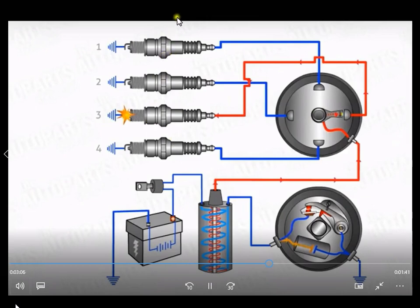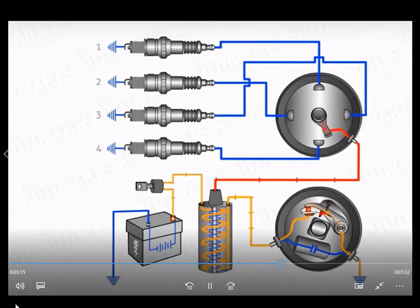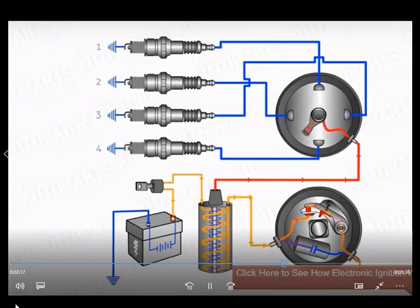Here is 4 spark plug. This needed for 4 cylinder engine. Now you see animation here is spark. This clamp distribution they see.